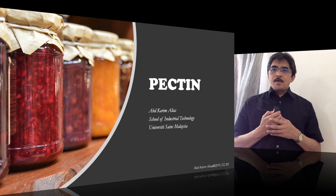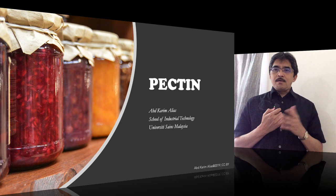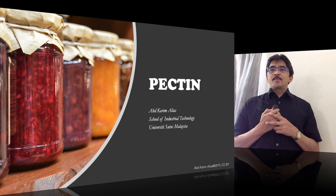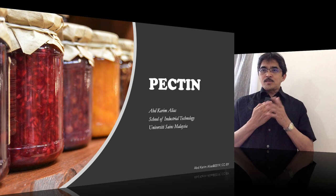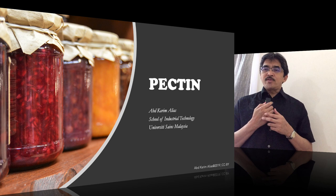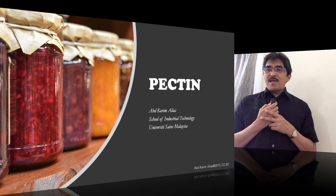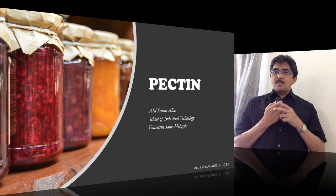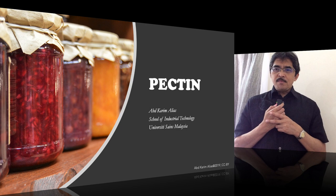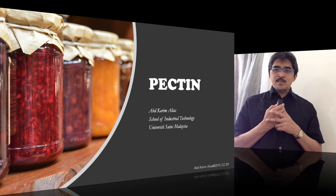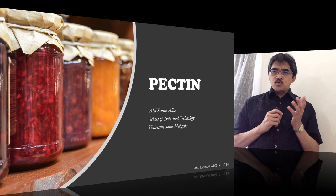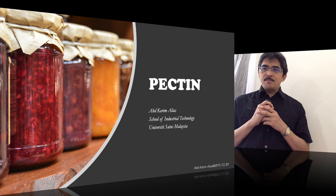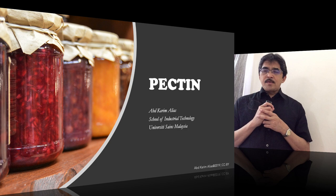Assalamualaikum and hello everyone. You can see fruit jam on the slide. I would like to talk about fruit jam today, but the title on the slide is called 'Pectin.' Why pectin? Because in any fruit jam you will find one ingredient called pectin. Pectin can be found in plants, in fruits, and in many parts of the plant, because pectin in its original form — proto-pectin — is actually part of a cell wall. It is a very interesting ingredient found in most fruit-based products including jam.